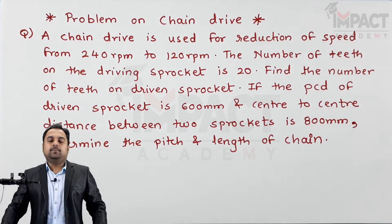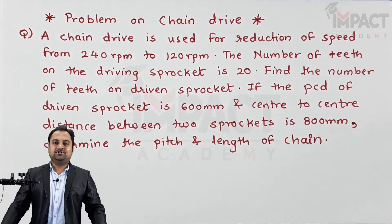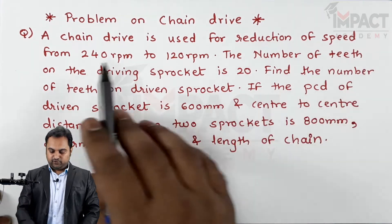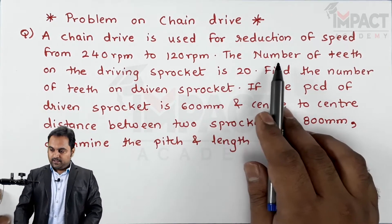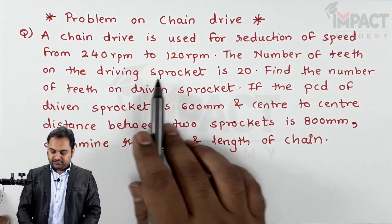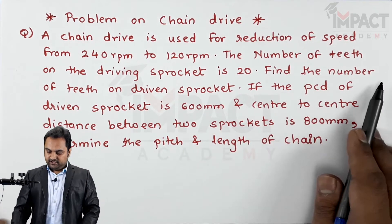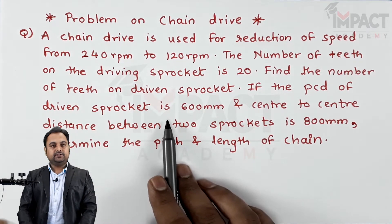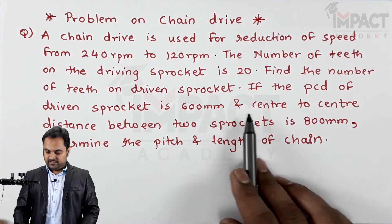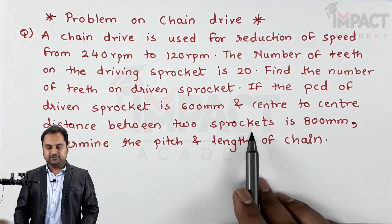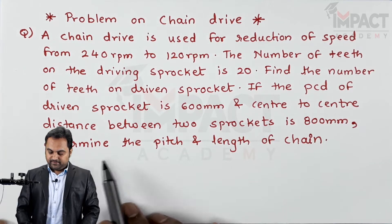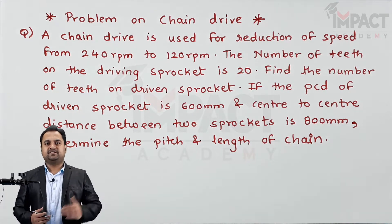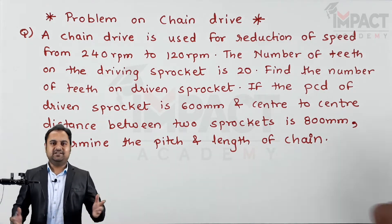Hi friends, in this video we'll see a problem on chain drive. A chain drive is used for reduction of speed from 240 rpm to 120 rpm. The number of teeth on the driving sprocket is 20. Find the number of teeth on the driven sprocket. If the PCD of the driven sprocket is 600 mm and center-to-center distance between the two sprockets is 800 mm, determine the pitch and the length of the chain.